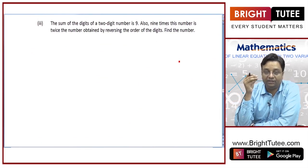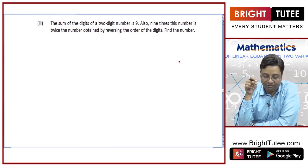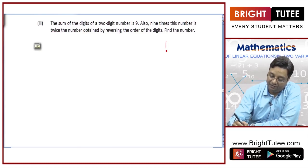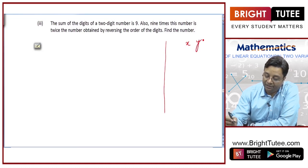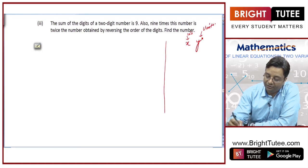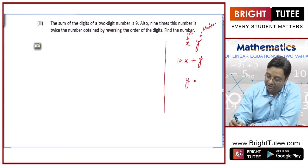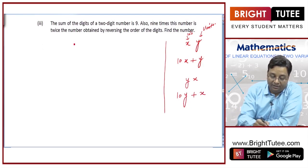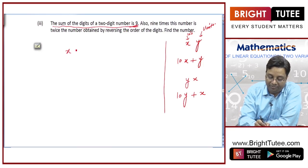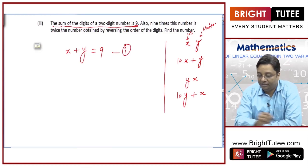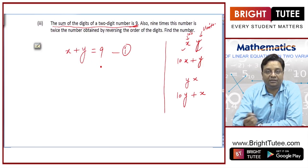The sum of digits of a 2-digit number is 9, and 9 times this number is twice the number obtained by reversing the order of the digits. Find the number. In such cases we assume the tens digit as x and units digit as y. If you expand this number it will look like 10x plus y. If you reverse this number it becomes yx, so its expansion is 10y plus x.